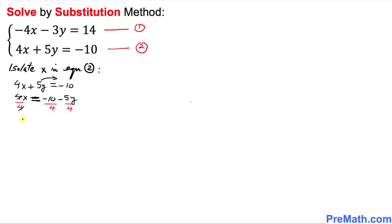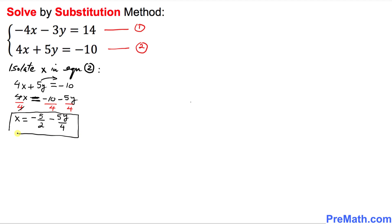The 4s cancel, so x turns out to be equal to negative 10 over 4, which reduces to negative 5 over 2, minus 5y over 4. This is our x value in terms of y, and we are going to call this equation number three.